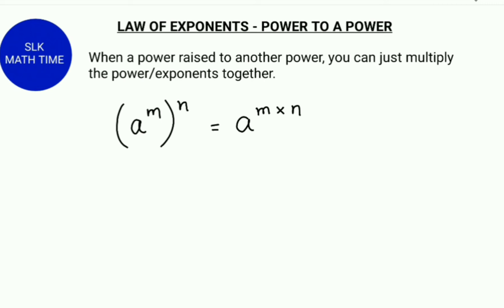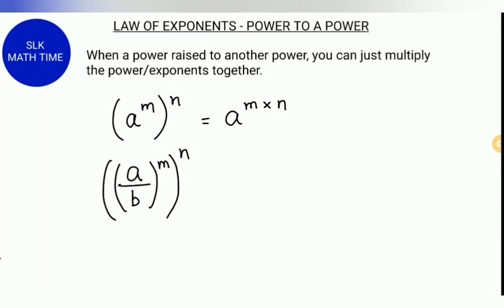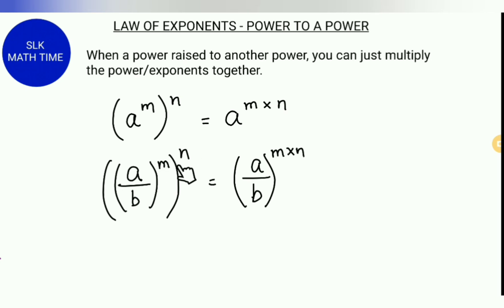Let's see another example: a divided by b, the whole power m, the whole power n. Here the exponents are m and n. So we keep the base the same and only multiply the exponents. So we keep a divided by b, the whole power m into n, since these are the two exponents.